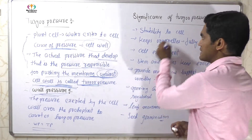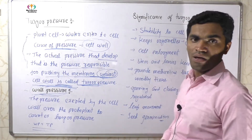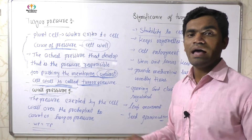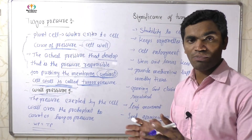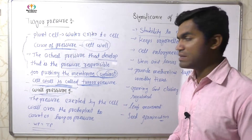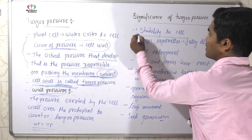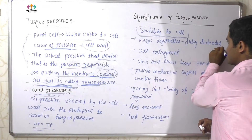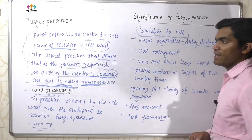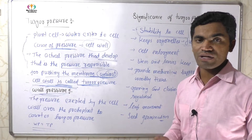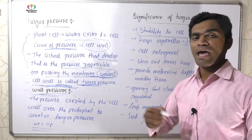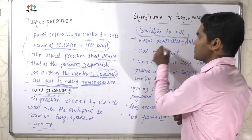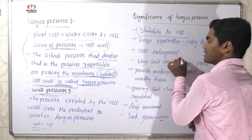The significance of turgor pressure: First is the stability and enlargement of the cell. The cytoplasm gives pressure on the cell wall, and due to this condition, the cell's stability is maintained. Second, organs are fully distended. All organ structure depends on the pressure, and due to the inner pressure of the cytoplasm, the organs are fully distended.